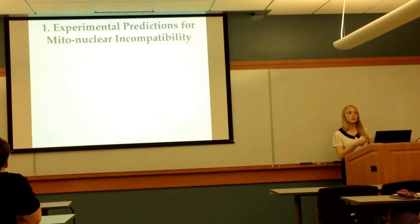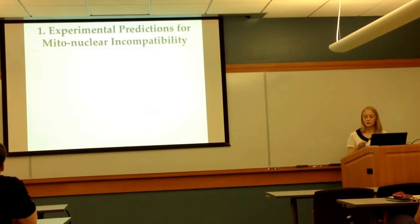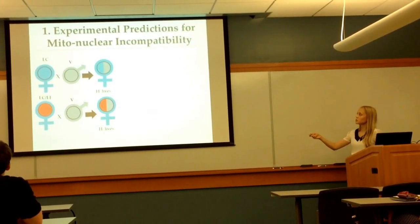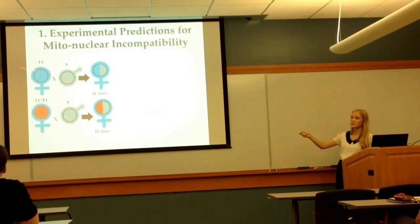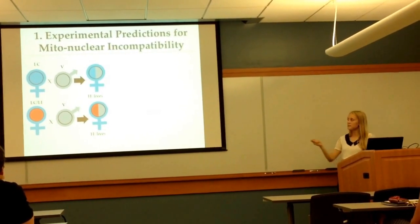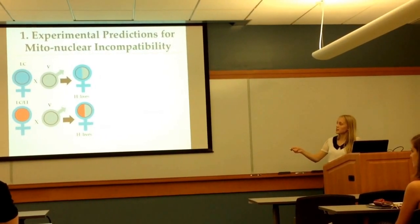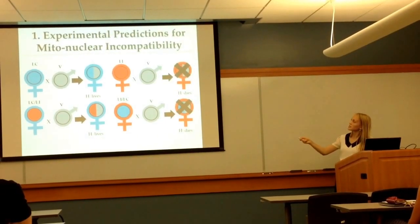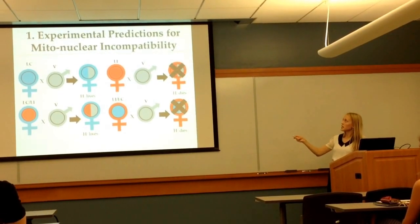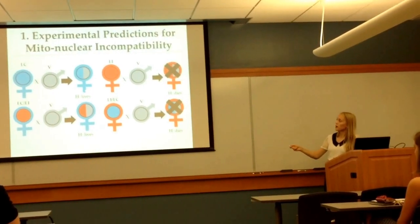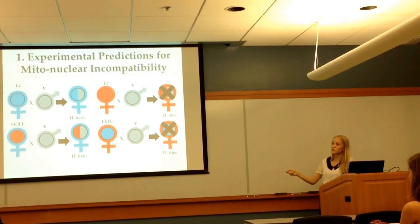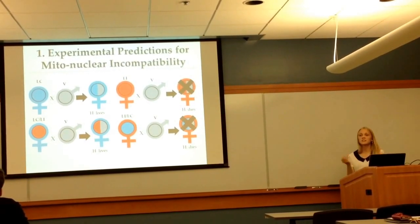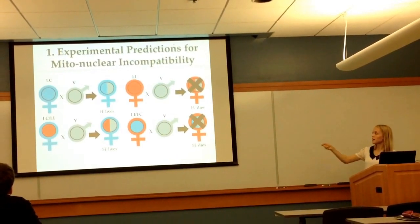I then used these introgression lines and the pure strains to figure out which hypothesis could be correct. If this hypermortality is due to a mitonuclear incompatibility, we'd expect that crossing LC females with vitripennis males would result in all hybrid daughters living — as already documented — and crossing LC-LI females with vitripennis males would also result in all hybrid daughters living. We'd expect crossing LI females with vitripennis males to result in all hybrid daughters dying, as already documented. And crossing LI-LC females with vitripennis males, we'd expect hybrid daughters to die. So hybrid death would correlate with the identity of the cytoplasm of the hybrid daughter — all those with LI cytoplasm would die.